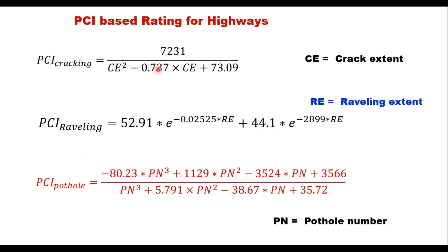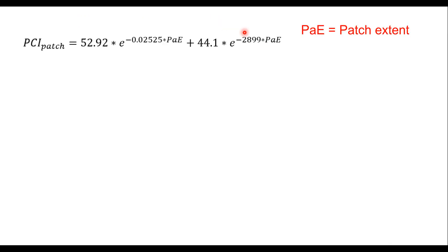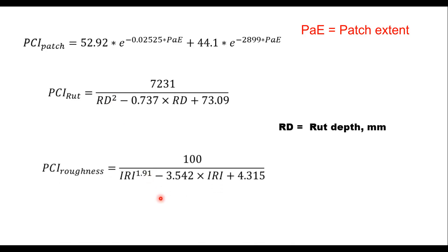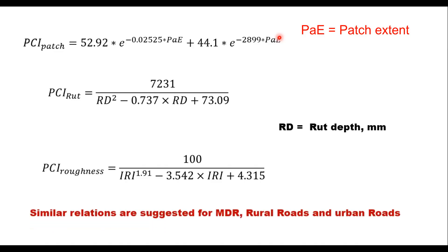These equations are suggested in IRC 82:2023 for highways and expressways. Similarly, for patching, PAE is the patch extent — surface area affected by the patch divided by total surface area of the pavement section. For rut, the equation is based on depth in millimeters, and for roughness it is based on IRI. Similar equations are also suggested for MDR rural roads and urban roads separately; refer IRC 82:2023 for the specific equations.